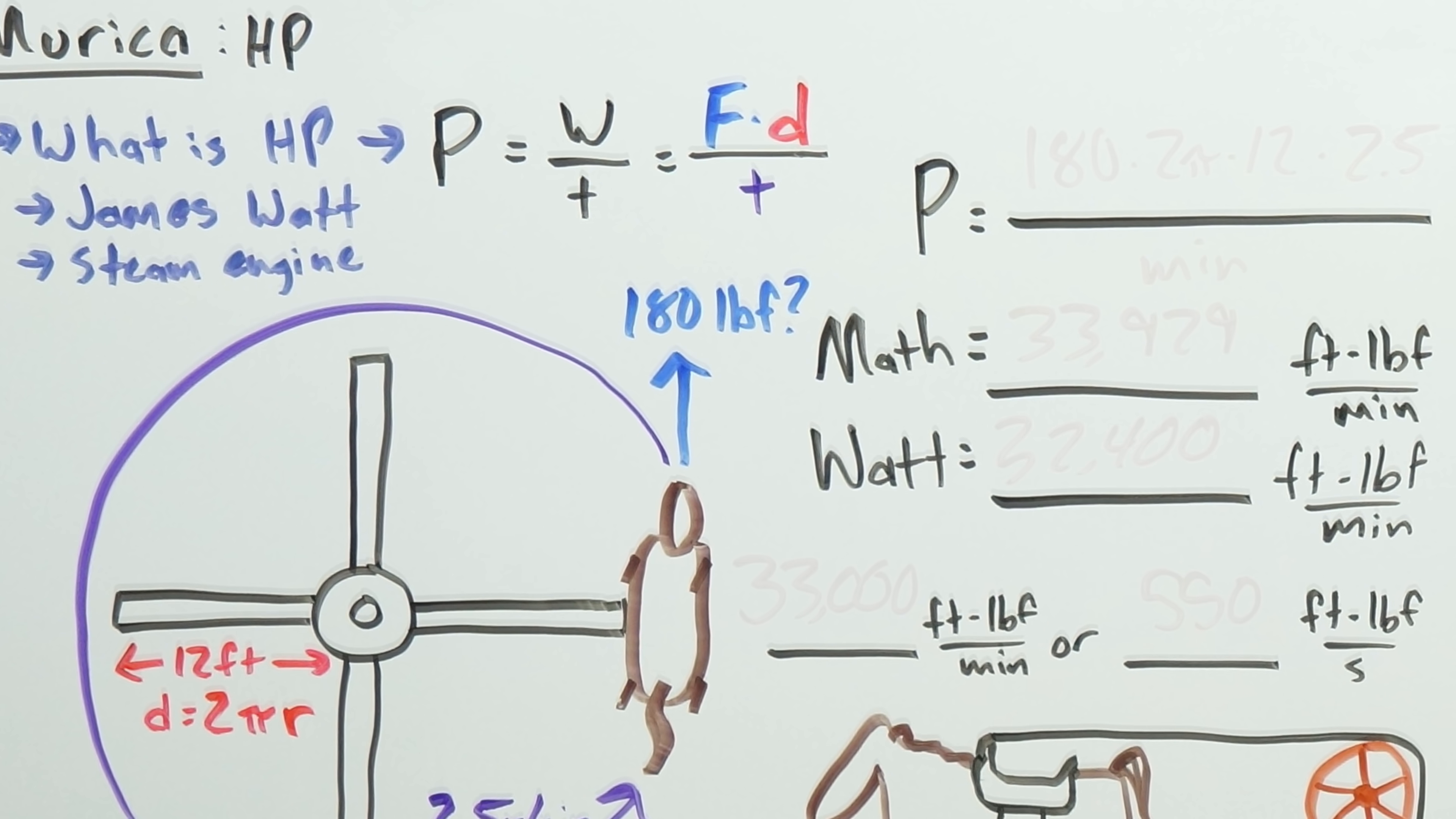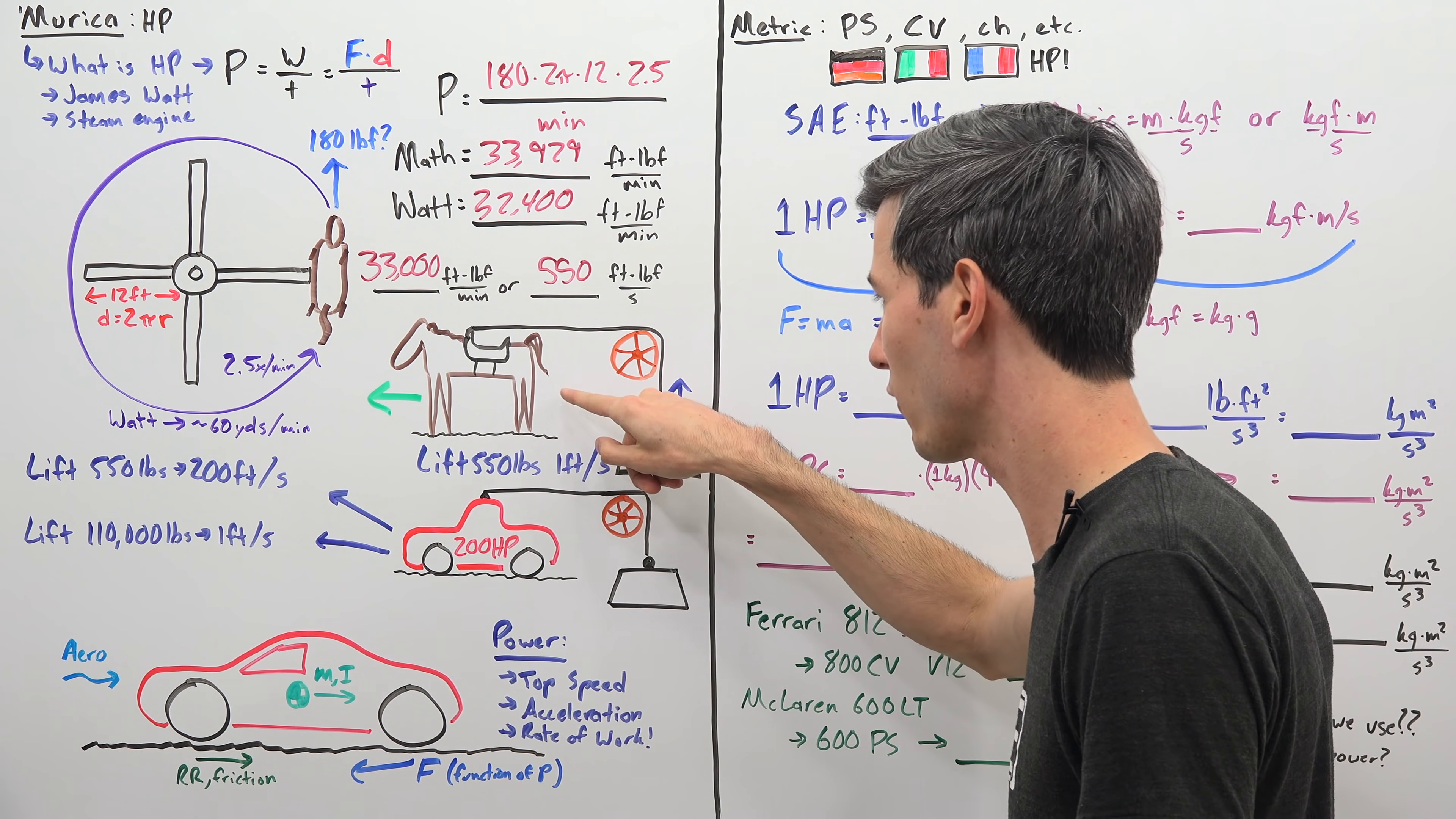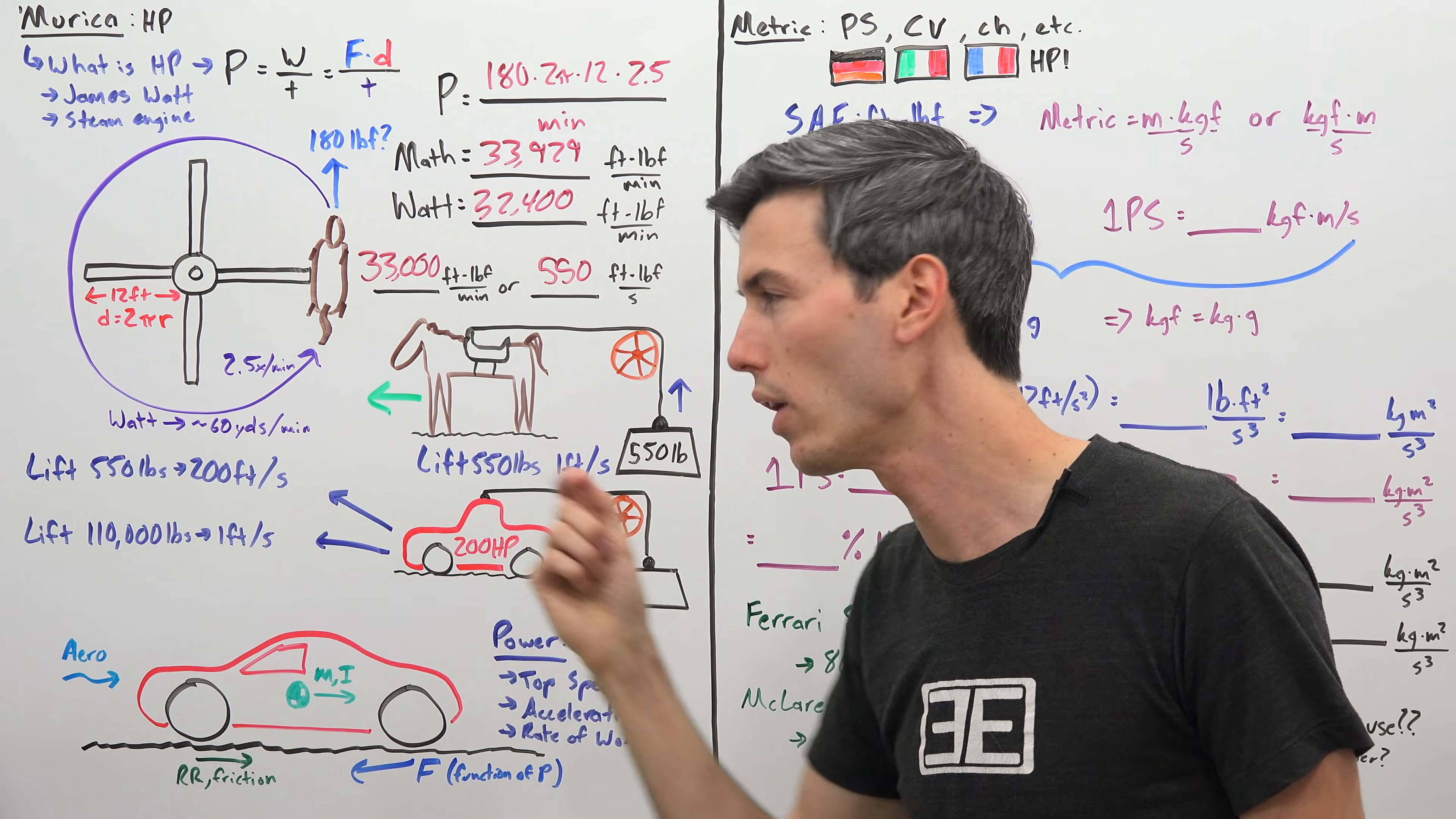Okay so just looking at these numbers and these units it probably doesn't mean anything to you directly. So what do these numbers actually mean? Well if you were to have a horse and it's got this pulley system so it's got a rope going across this pulley and it has 550 pounds hanging from it, this horse would be able to lift this 550 pound weight one foot in one second. So that's 550 pounds of force up one foot in one second. So that's what that one horse is doing.